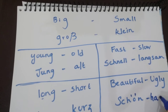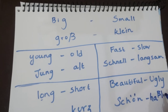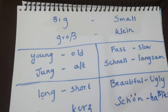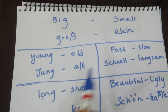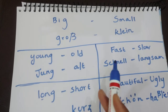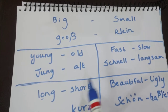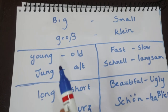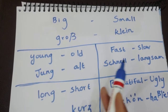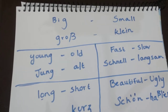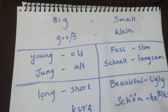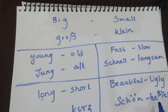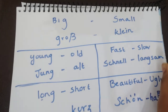So the differences — the opposites we covered: young/old = jung/alt, fast/slow = schnell/langsam, big/small = groß/klein, long/short = lang/kurz, beautiful/ugly = schön/hässlich.